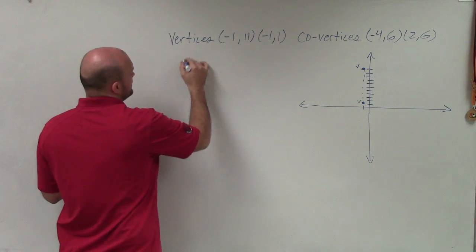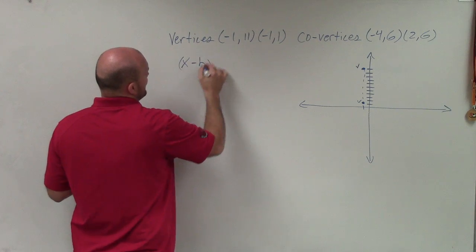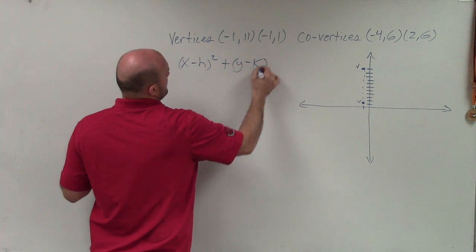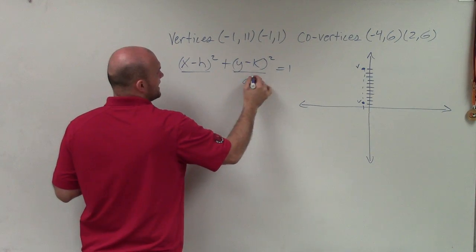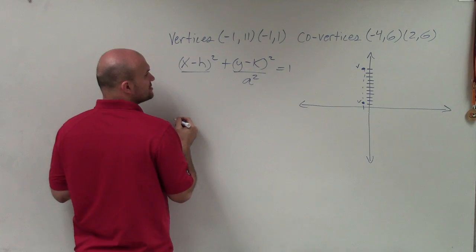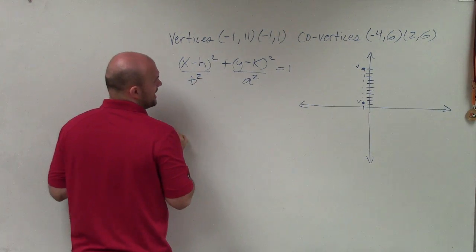So therefore, I'm automatically going to use the formula (x-h)²/b² + (y-k)²/a² = 1. And remember, when it's vertical, the a, the distance from my center to my vertices, is going to be under the y, and my b² is under my x.